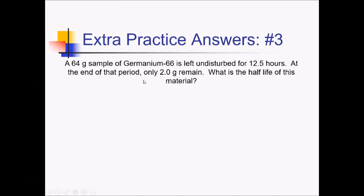On this problem, we have a 64-gram sample of germanium-66, undisturbed for 12.5 hours, and at the end only 2 grams remained. We want to know the half-life of this material. Starting with our half-life formula AB to the T over K, we're looking for the K value — the amount of time you have to wait before you multiply by one-half.